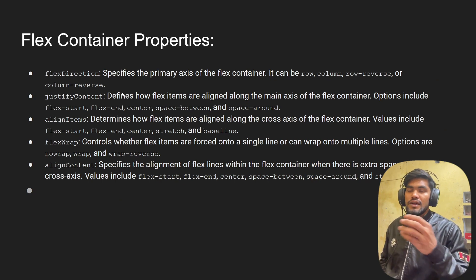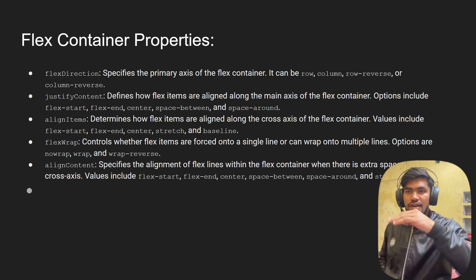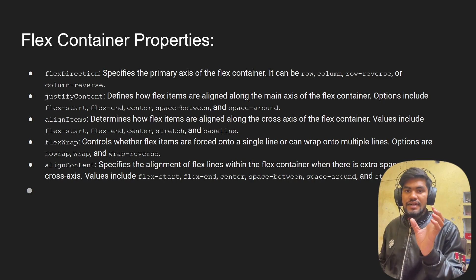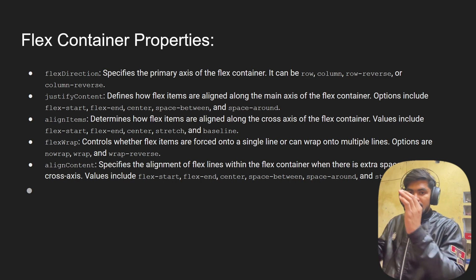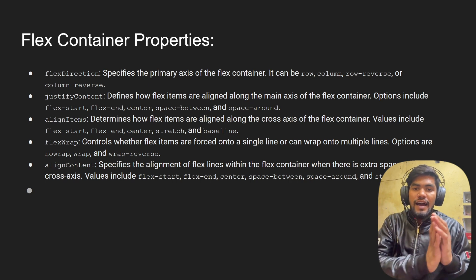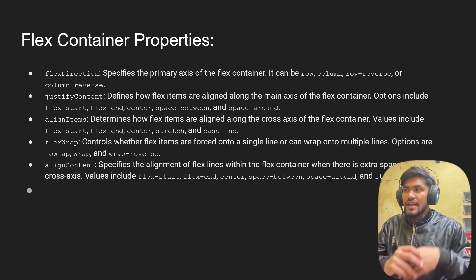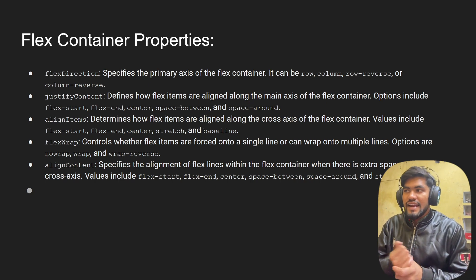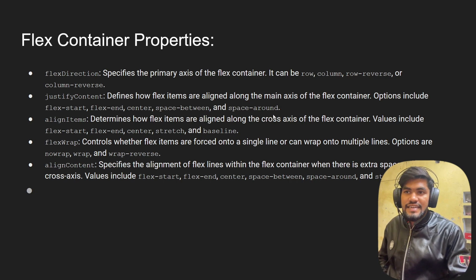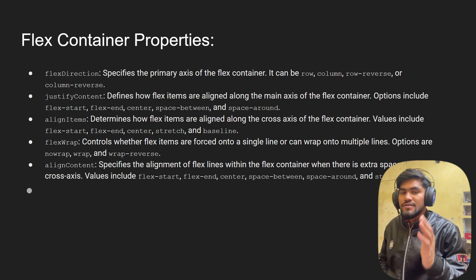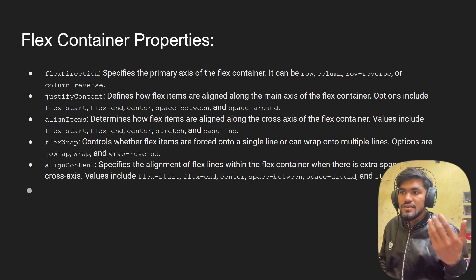There are some important Flexbox properties. Flex direction defines which direction items flow — row, column, row-reverse, or column-reverse. Justify content controls how flex items are positioned along the main axis: flex-start, flex-end, center, space-between, or space-around. Align items controls how items are aligned along the cross axis of the flex container — flex-start, flex-end, or center.